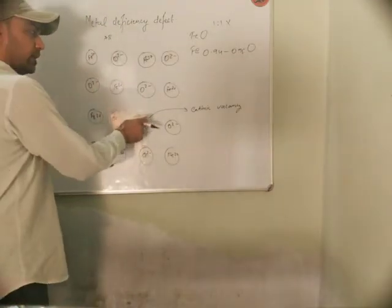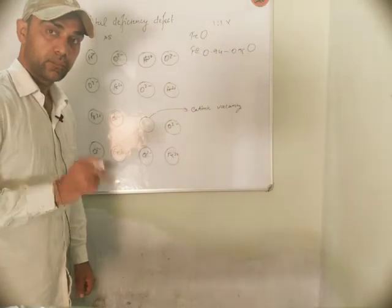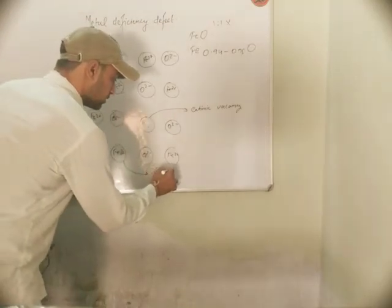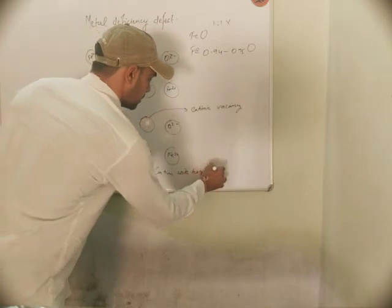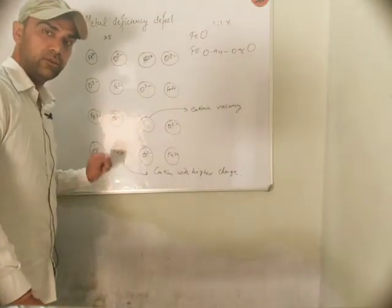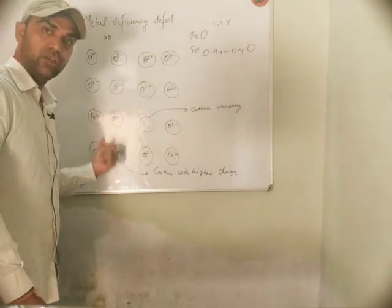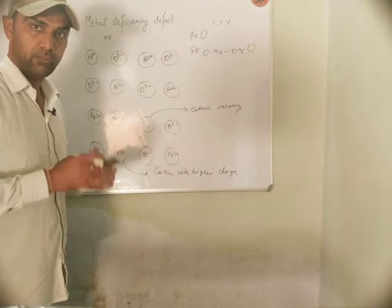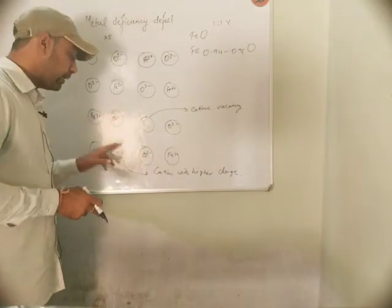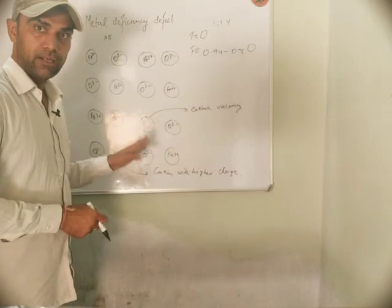Now here the cationic vacancy exists — Fe2 positive is missing. Here you can see a cation with higher charge: Fe3 positive is present. So the crystal remains electrically neutral but a vacancy is created. The cationic vacancy is where Fe2 positive was, and at a neighboring site Fe3 positive compensates. This is how metal deficiency defect is created in FeO.